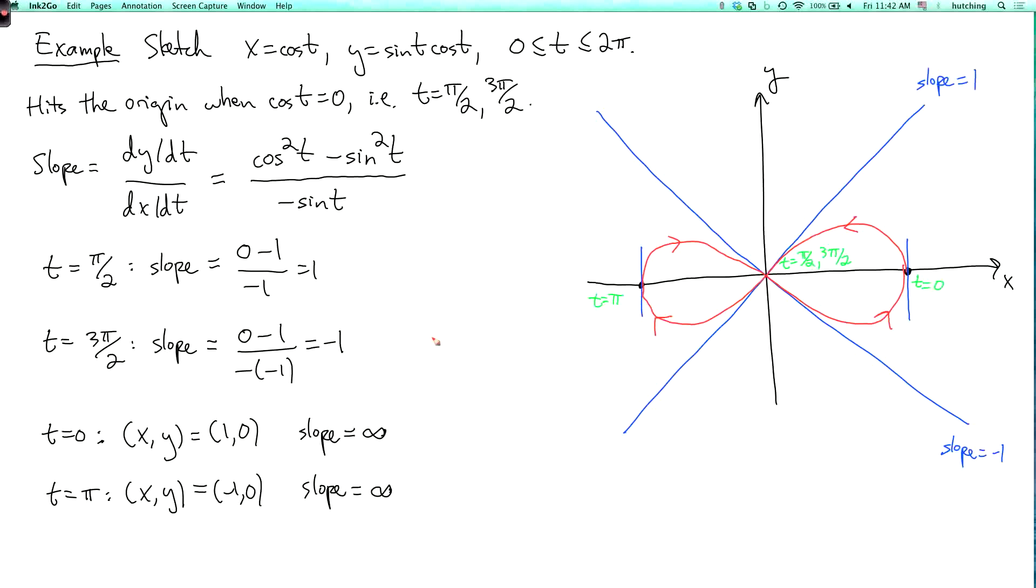Now, if we want to double check those arrows, another way we can do this is that at t equals 0, for example, we know that x prime of t is minus sine t, which is 0. And y prime of t equals cosine squared minus sine squared t, which is 1. So this tells us that the arrow at t equals 0 is going up. And at t equals pi, x prime is minus sine t, which again is 0. And y prime of t is again equal to 1. So again, the arrow is up at time t equals pi. You could also calculate the arrows at some other points.